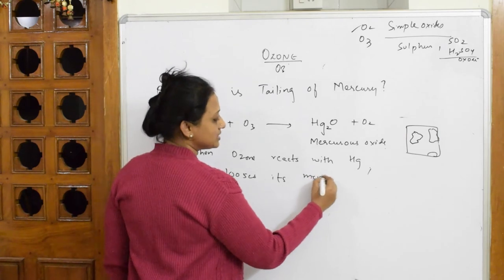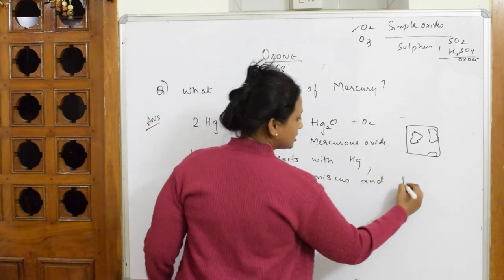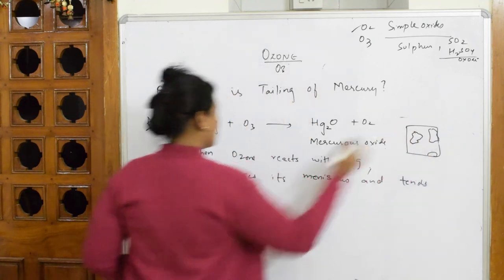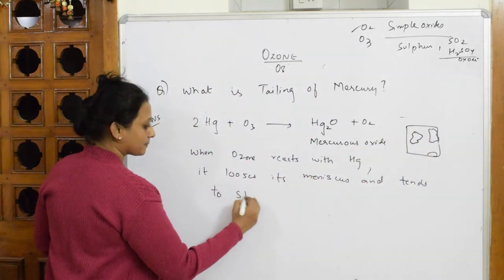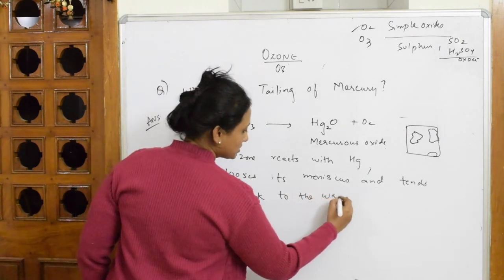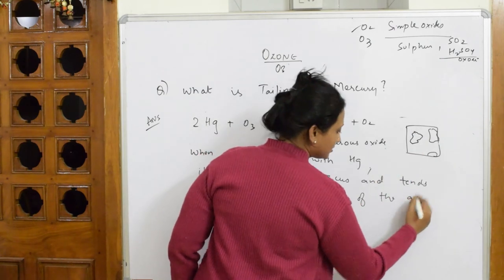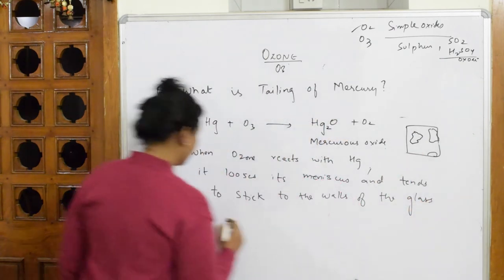It loses its meniscus and tends to stick to the walls of the glass container.